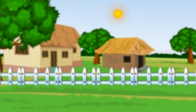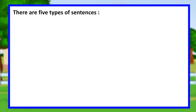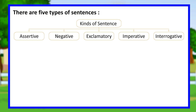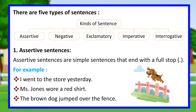There are five types of sentences: assertive, negative, exclamatory, imperative, and interrogative. Assertive sentences are simple sentences that end with a full stop. For example: I went to the store yesterday.